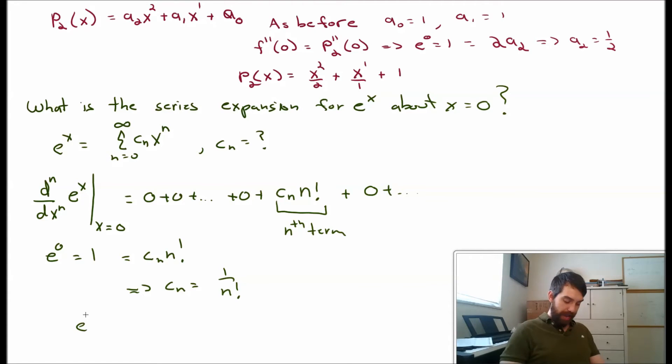And thus, what I get is that e^x is the sum from n equal to 0 to infinity, plugging in for my cn, of x^n over n factorial. And this is going to be my series expansion for e^x.